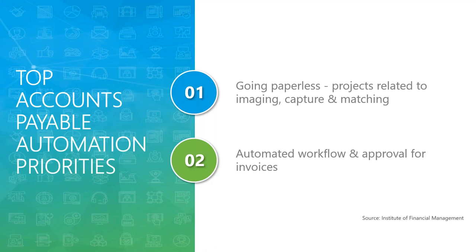Further research shows that the top initiatives by companies looking to streamline their AP process are to go paperless and automate their workflow. Based on survey results from the Institute of Financial Management, these two items emerge at the top of the list as the top priorities of AP automation. Number one is a clear indication that many companies are still far from transitioning to processing invoices digitally — meaning 100% digital. Number two is another high priority, with solutions either in progress or scheduled to be implemented within the next three years.